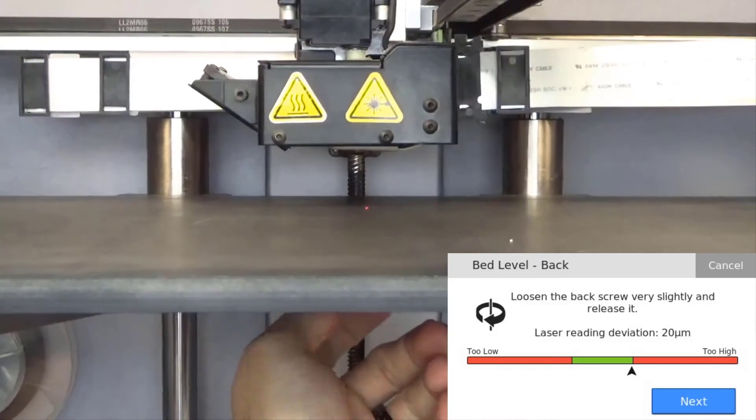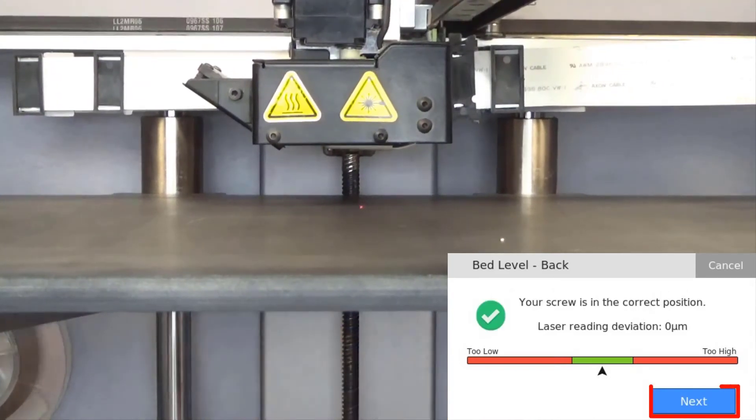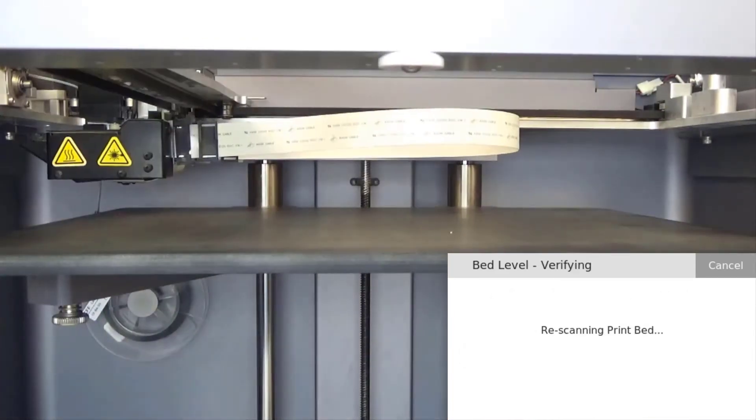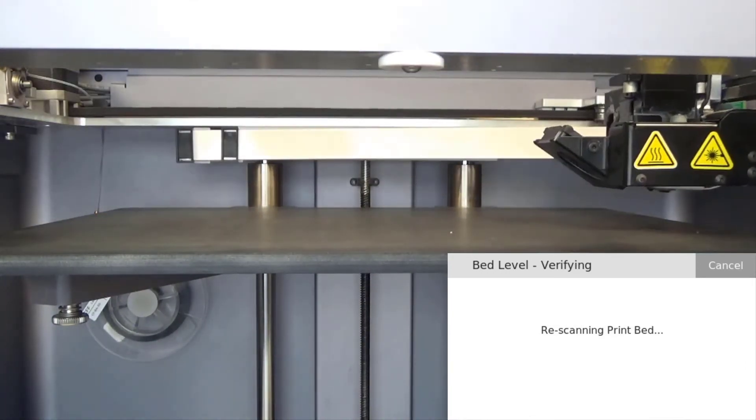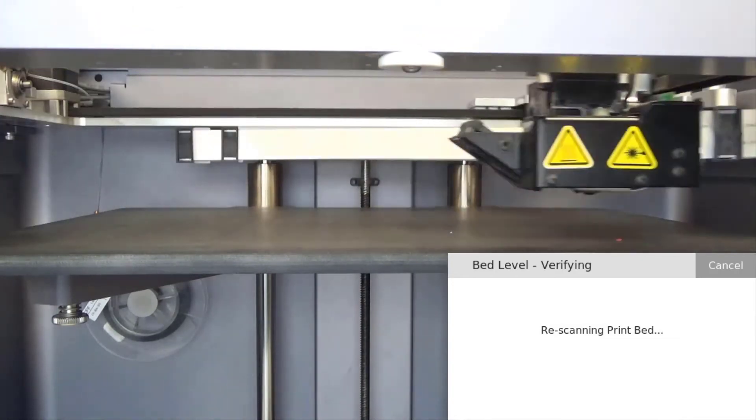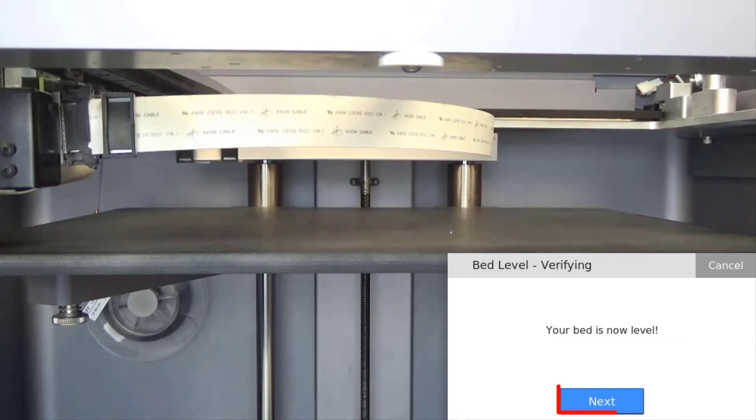Finally, we will repeat this process for the third thumbscrew and press next. Once all thumbscrews have been adjusted, we will wait for the print head to complete the second scan of the print bed and then press next to calibrate the relative positions of the nozzles.